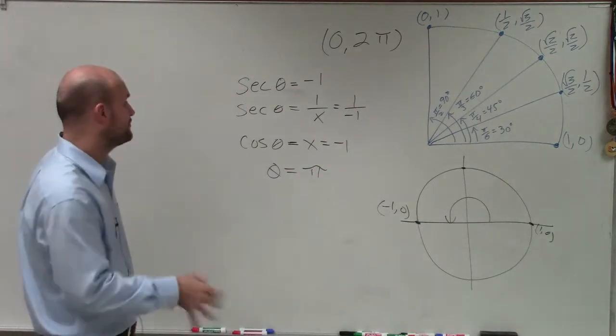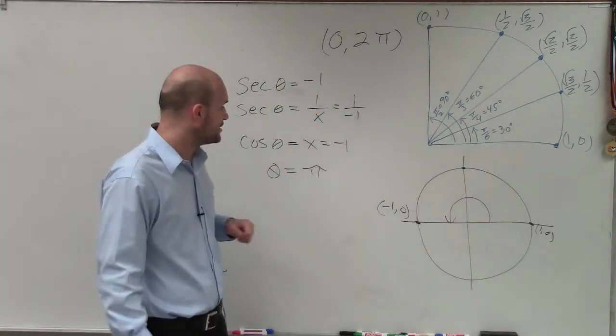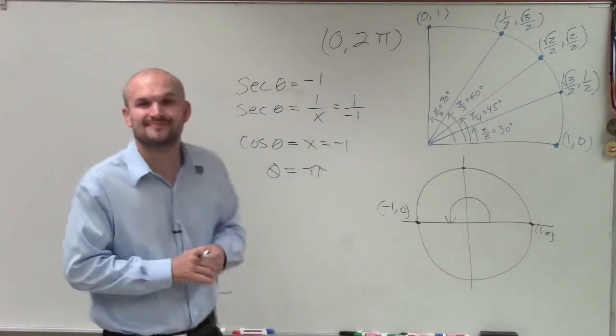And we can't go in the positive or an extra revolution or in the negative direction because our angle has to be between 0 and 2 pi. So there you go, ladies and gentlemen. That is how you evaluate theta given your angle. Thanks.